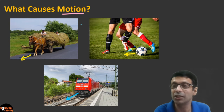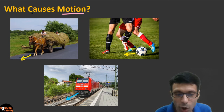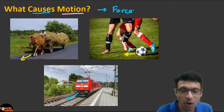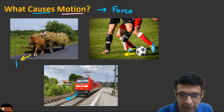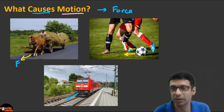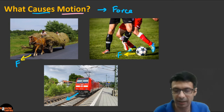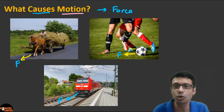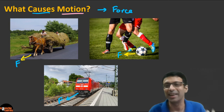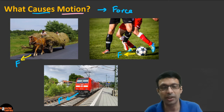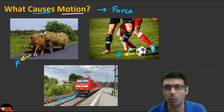We've been studying the motion chapter and the answer is force. The horse is applying a force, the footballer is applying a force on the ball, and the engine of the train is applying a force pulling the train. There's clearly a force involved that causes motion.